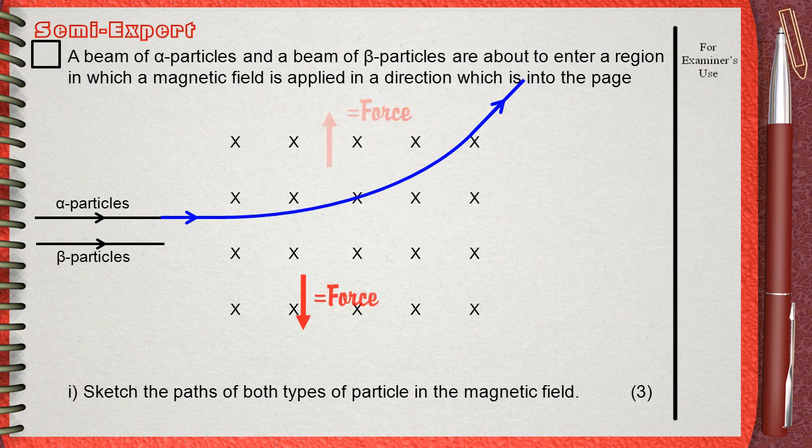Of course, the opposite will be for beta particle. The same magnetic field that pushes the alpha particles in a curved path upwards will also push the beta particle downwards. So, we will continue again as a straight line until it enters the magnetic field, then we will draw a curved line inside the magnetic field, and then again it continues as a straight line.